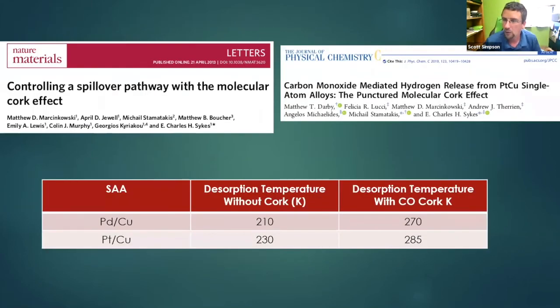So right now, in terms of the temperature that this can be done at, there are a couple different single atom alloys. There are ones with palladium and ones with platinum. The desorption temperature of hydrogen without a cork is around 200 or 210, 230 K. And we want to utilize this stuff at a temperature that we can access. So that's not going to work.